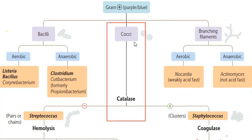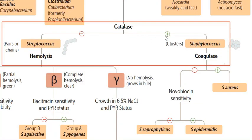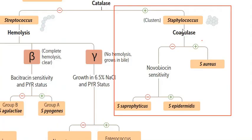Now we move to cocci, which are round-shaped and look like cookies. We check whether cocci has catalase enzyme or not. Catalase-positive are Staphylococcus, while catalase-negative are Streptococcus. In Staphylococcus, we check the coagulase enzyme.